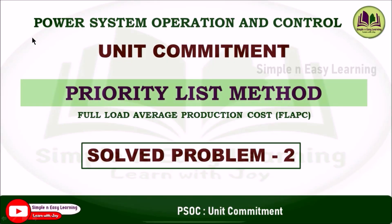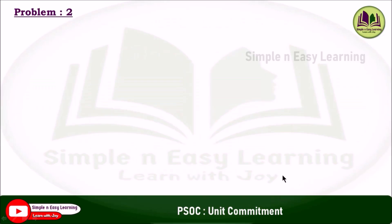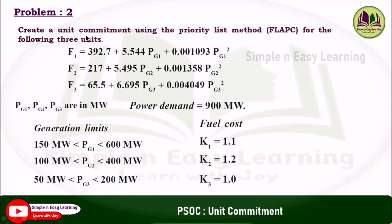Unit commitment priority list method using full load average production cost — solved problem 2. Create a unit commitment using the priority list method for the following three units. The three unit cost functions and generation limits are given, the power demand is 900 megawatt, and the fuel cost data are given.